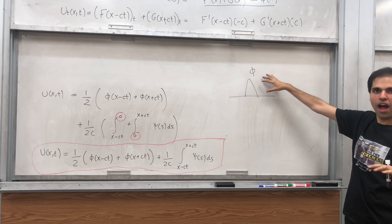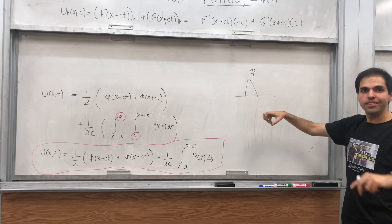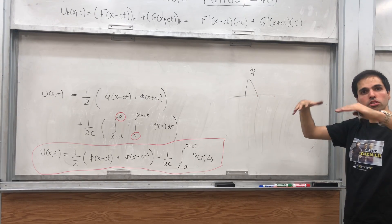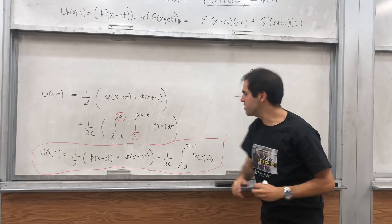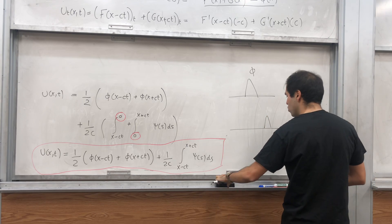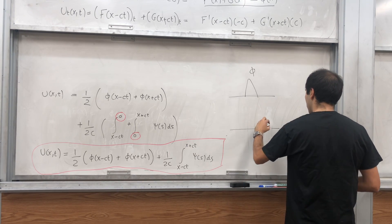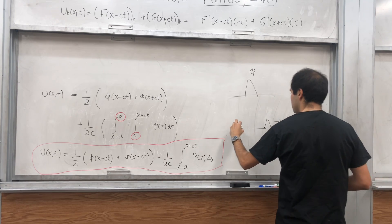So what this means, after a certain while, this pyramid phi splits up into two parts of like half the height, because you have this half, and one part basically goes to the right at speed C, and the other part goes to the left at speed C.